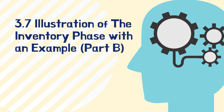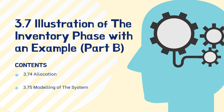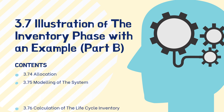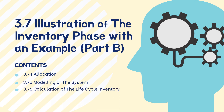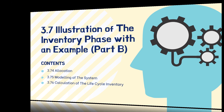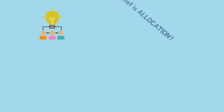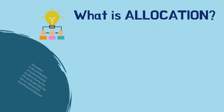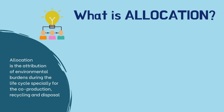In this Chapter 3, I will explain the illustration of the inventory phase of LCA with an example — Part B. The content will focus on the allocation modeling of the system and the calculation of the life cycle inventory. Allocation is the attribution of environmental burdens during the life cycle, especially for co-production, recycling, and disposal.